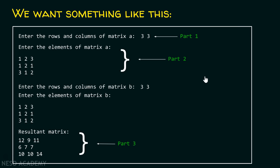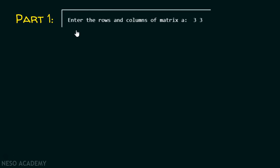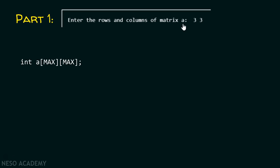Let's see part number one. As I mentioned, in part one I am going to explain how to ask the user to enter the rows and columns of matrix A as well as B, and how to store these values entered by the user. For this purpose, I will take matrix A as an example — the same procedure will be applicable for matrix B as well.